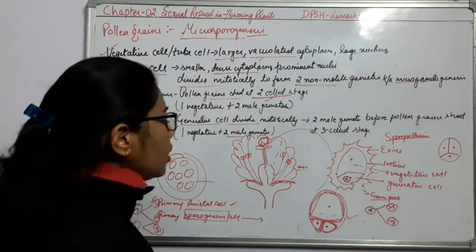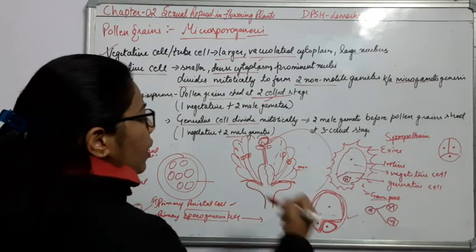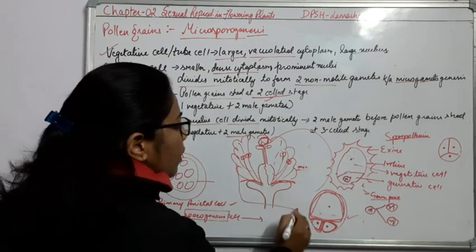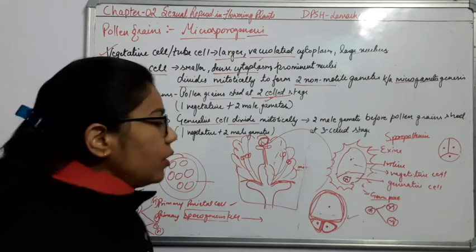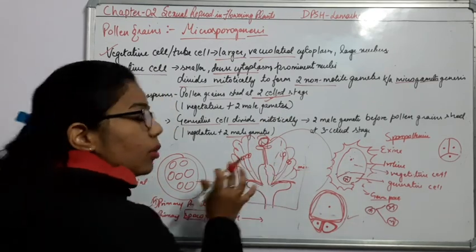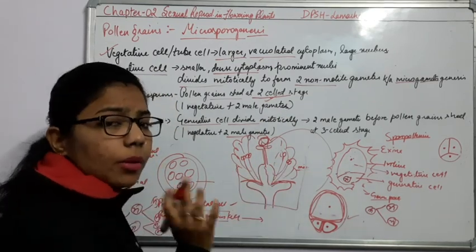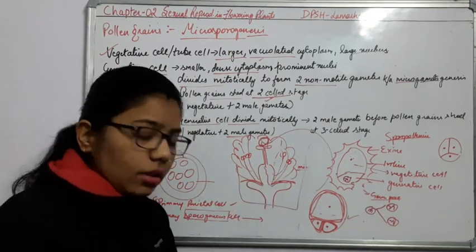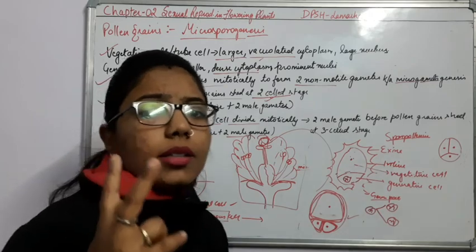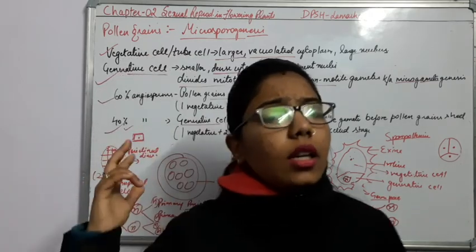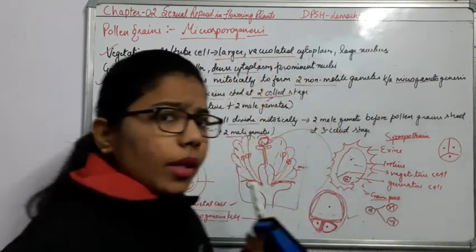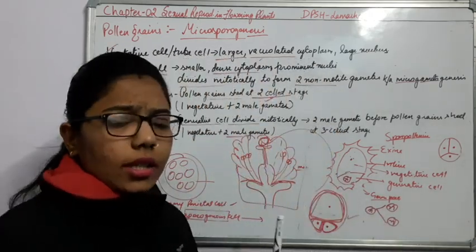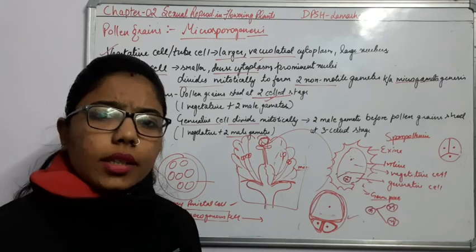In megasporogenesis, we are discussing about the female flower — not the male. We will discuss about the female gametophyte, which consists of three parts: stigma, style, and ovary. That's all for today. Thank you.